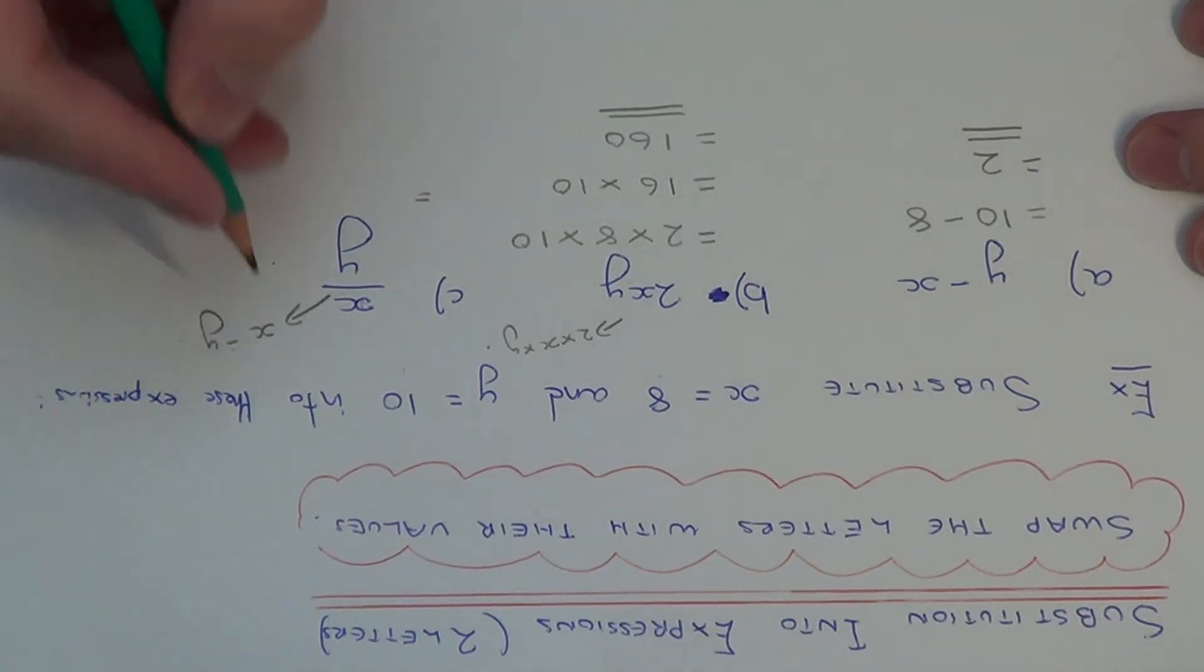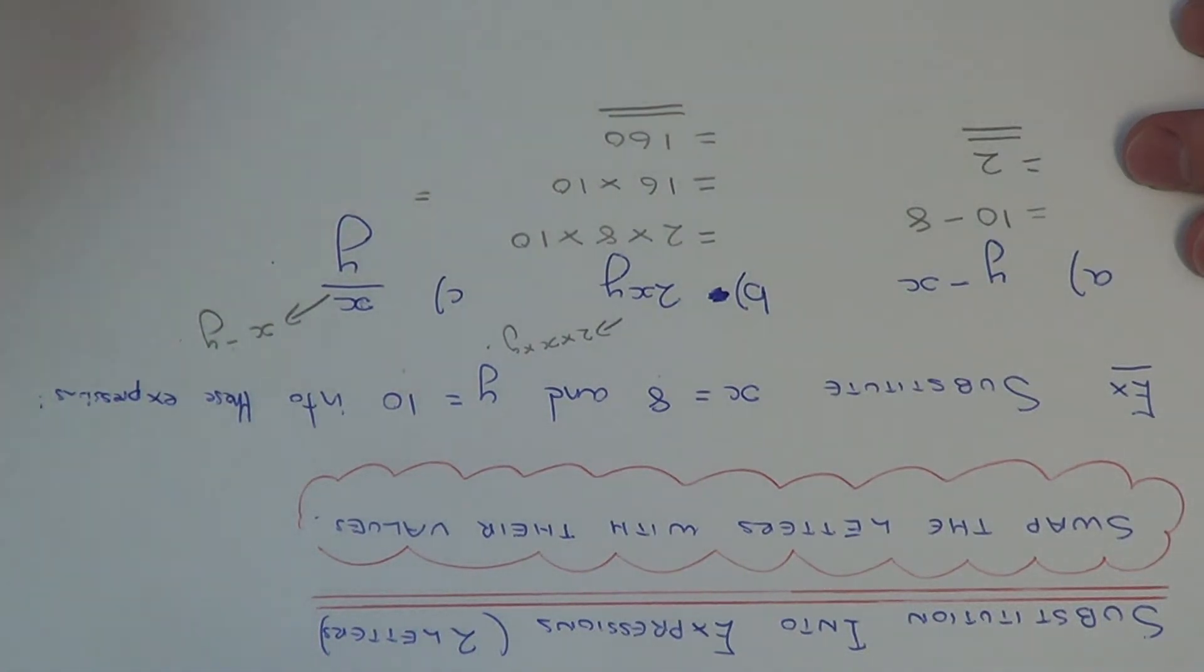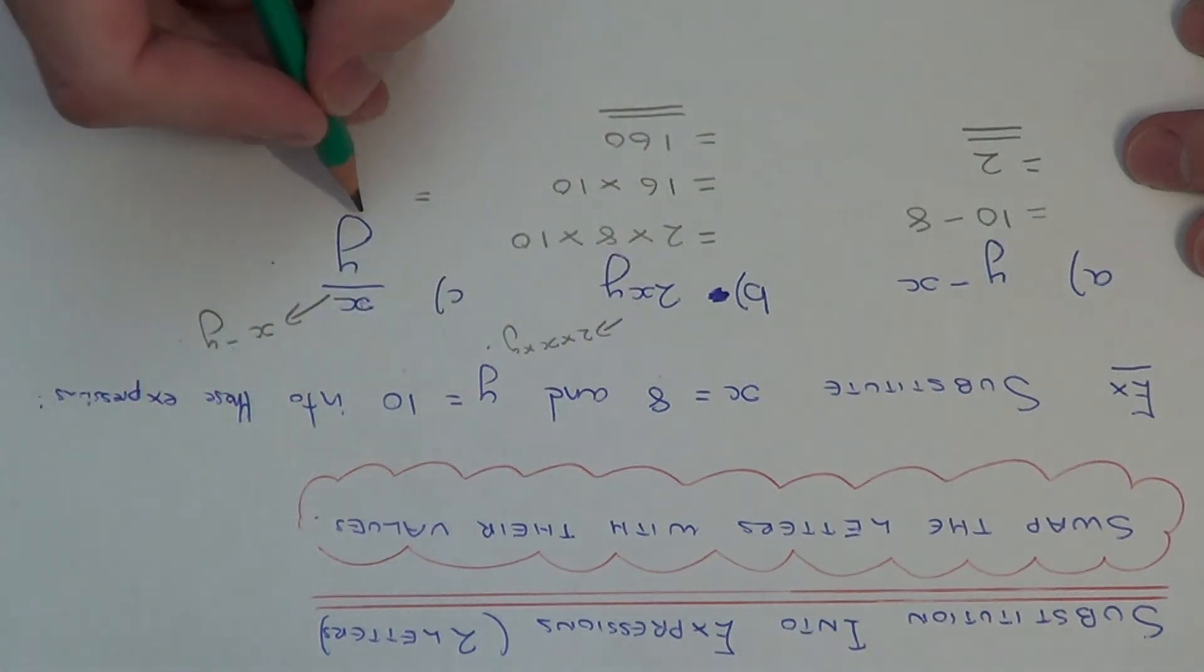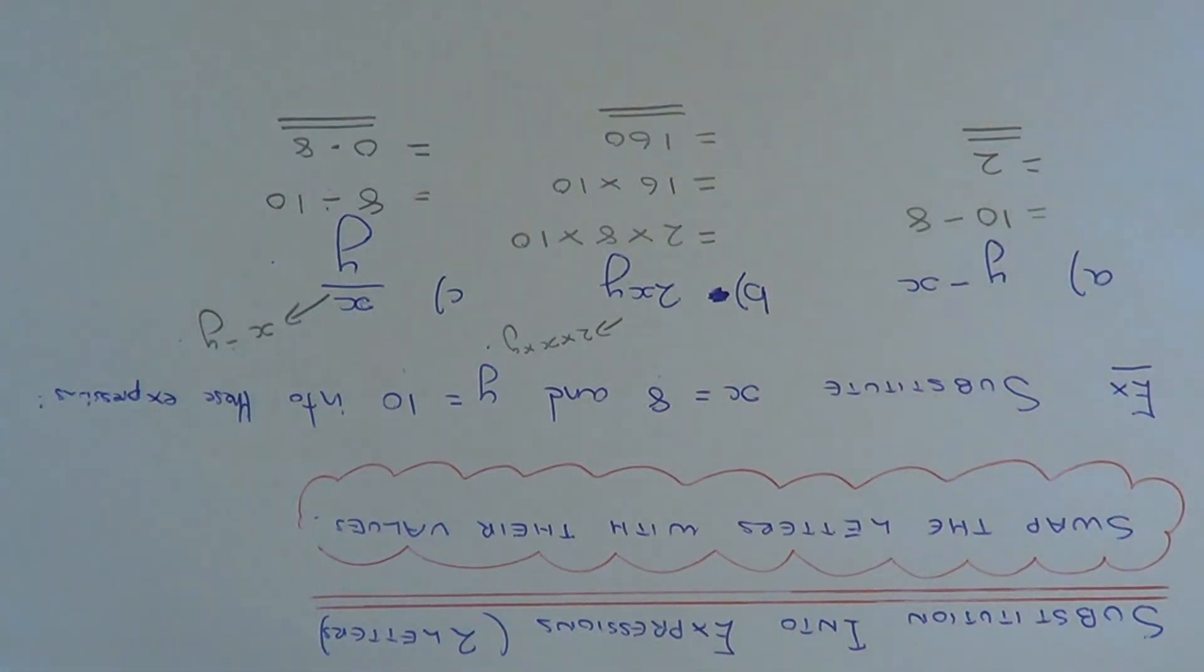Another thing as well, make sure you do it in the correct order. Don't do y divided by x, because that will give you a different answer. So x is 8 and we need to divide that by y which is 10. So 8 divided by 10 will give us an answer of 0.8. Thanks for watching.